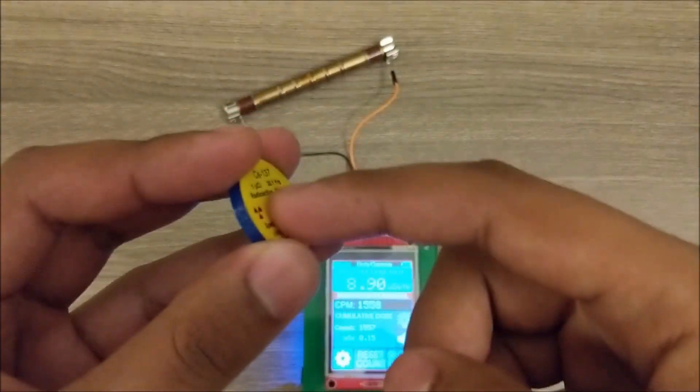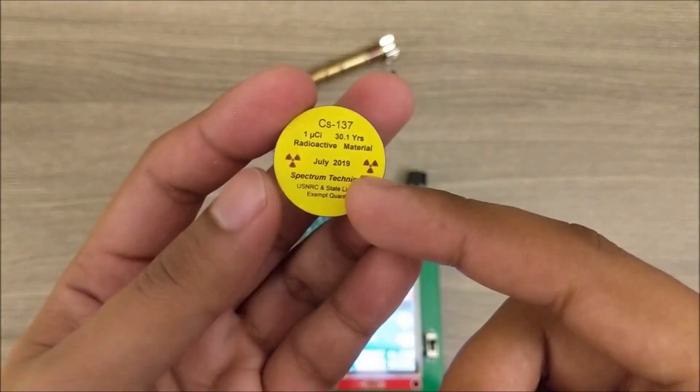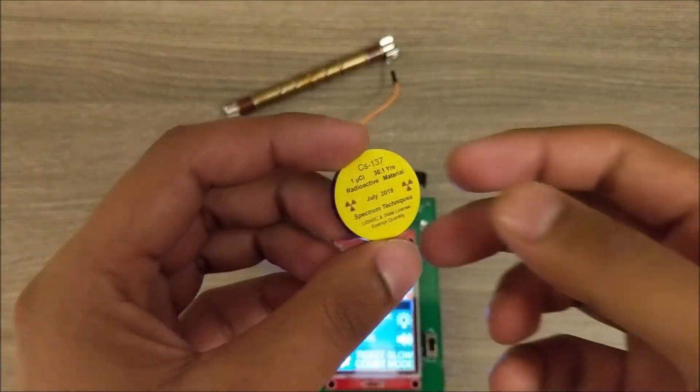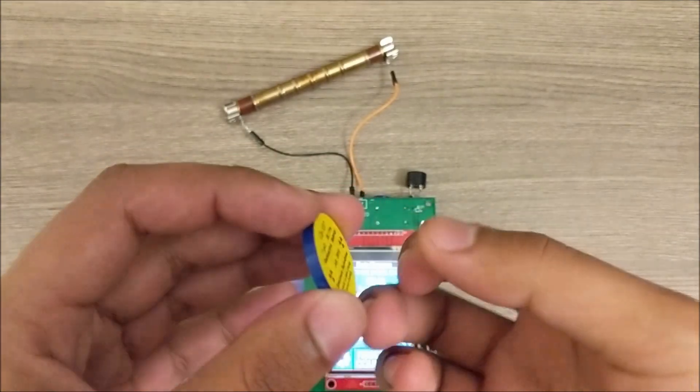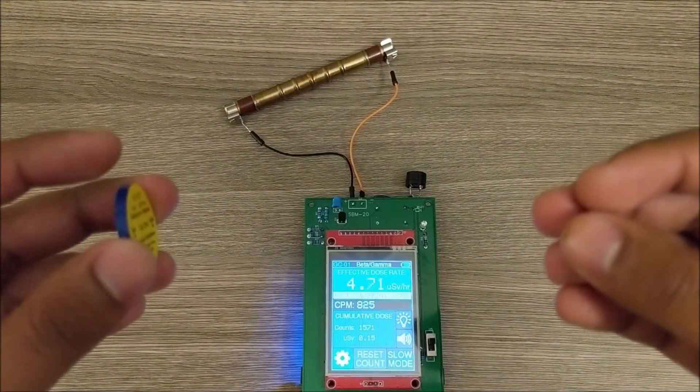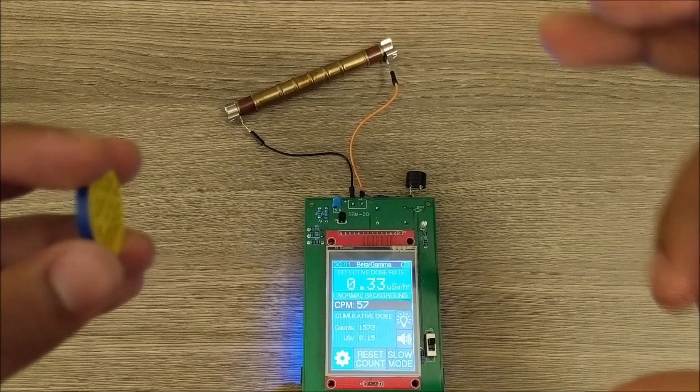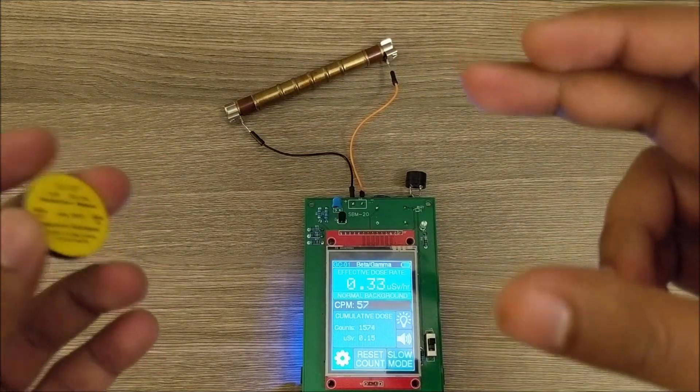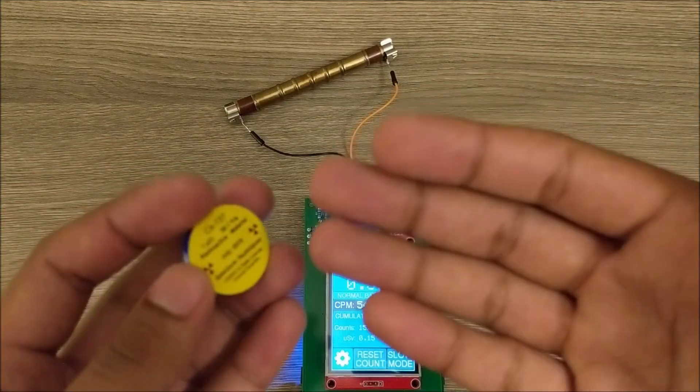The basic idea behind calibrating a Geiger counter is that we take a source and we calculate theoretically using formulas what the effective dose should be at some distance. Then we place the Geiger tube at that distance and measure the counts per minute that it gives us. So then we have an easy way to relate the counts per minute to the expected dose rate at that distance.